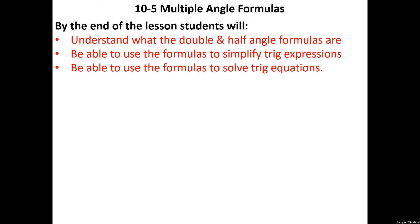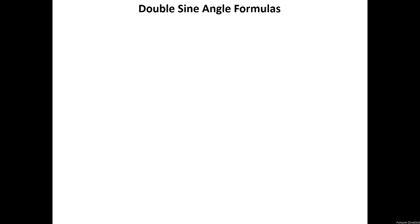The first video is just going to be on the formulas themselves. There is sort of an origin behind them, but the purpose of the double angle formulas is to make it so that you can find more angles than what's on the unit circle. The first one we're going to talk about is the double sine formula. The sine of 2U is equal to 2 times the sine of U times the cosine of U. These formulas are typically given to you — you don't have to memorize them per se — but note that U on the right side of the equation represents basically half of the angle that you're given.